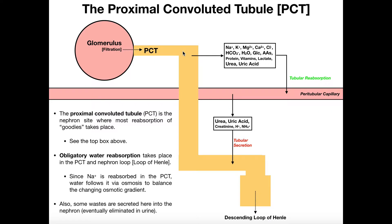The proximal convoluted tubule is drawn in a zigzag because it is convoluted, and it's proximal because it's directly adjacent to the glomerulus. Running next to it, we have a set of capillaries called peritubular capillaries. In the proximal convoluted tubule, we can use active transport to actively move substances we don't want to get rid of back into the peritubular capillaries, so instead of being eliminated in the urine, they're reabsorbed back into the blood.